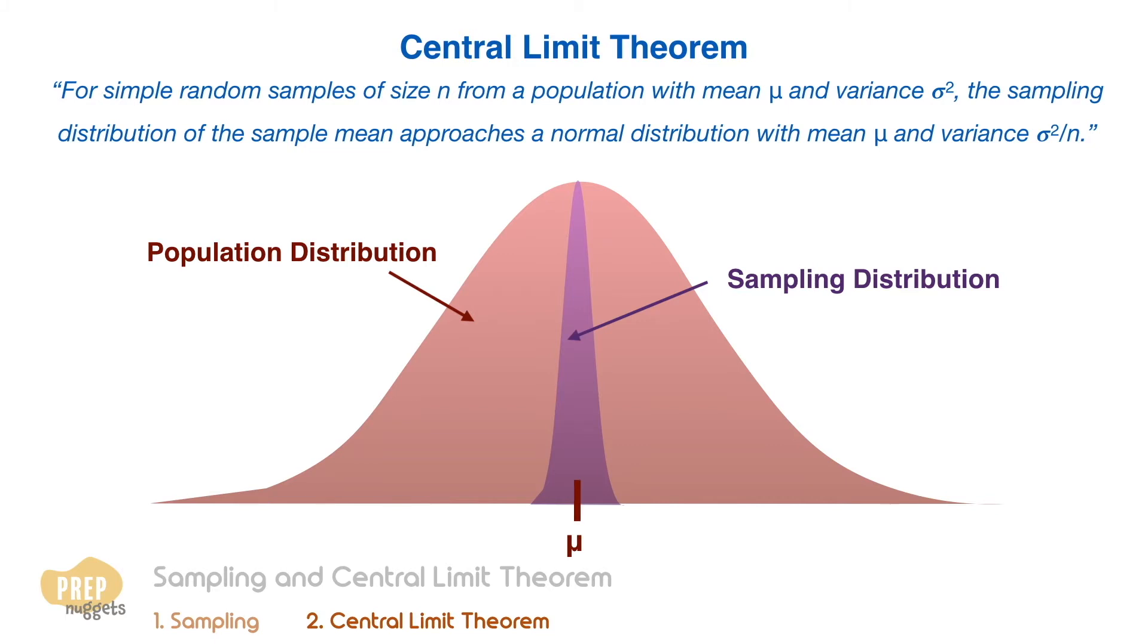The central limit theorem is extremely useful because the normal distribution is easy to apply to hypothesis testing and confidence intervals, which we'll learn later. The beauty of it is that the population distribution does not have to be normal. As long as the sample size is at least 30, the sampling distribution approximates to a normal distribution.